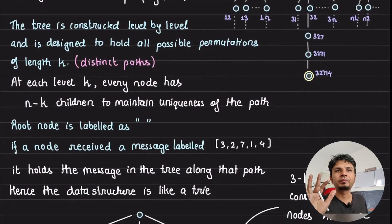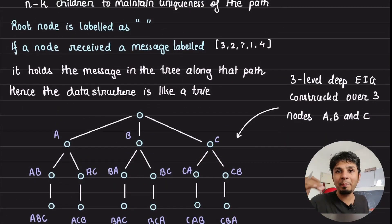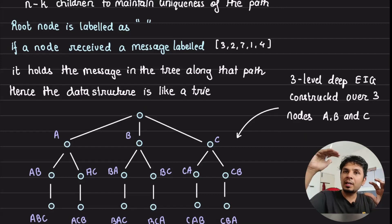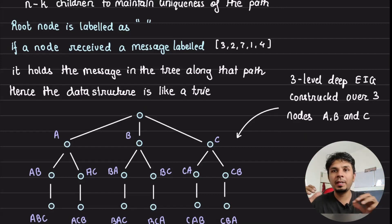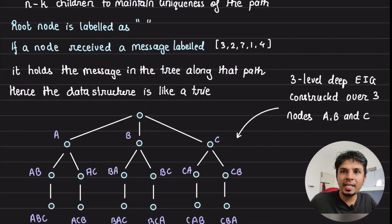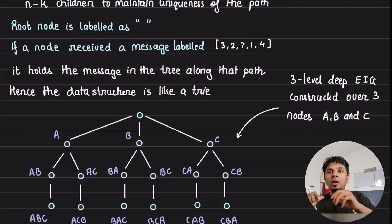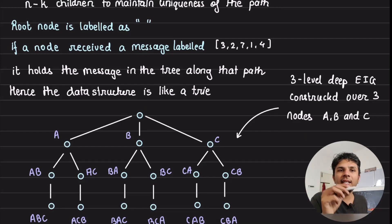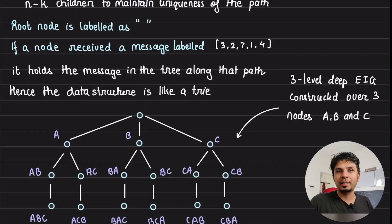For example, if I have nodes A, B, and C in the network, and I'm constructing a three-level-deep EIG tree, then at the leaf of the EIG tree I would have all possible permutations of A, B, and C. It would be A-B-C, A-C-B, B-A-C, B-C-A, C-B-A, and C-A-B.